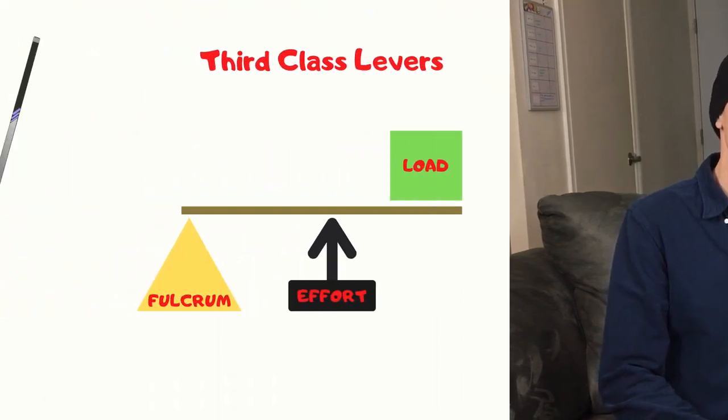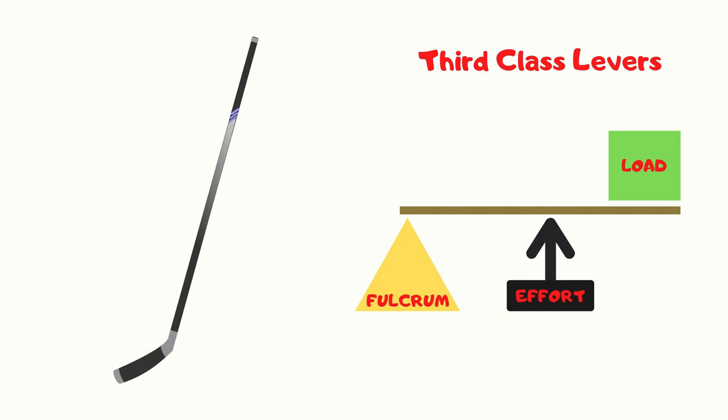Well, what's a third-class lever then? A hockey stick is a third-class lever. In a third-class lever, the effort is located between the load and the fulcrum. The end of the stick, where your hand that's farther from the puck goes, is the fulcrum. The hand that's closer to the puck on the stick is the effort. The load is the puck.